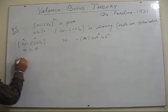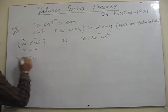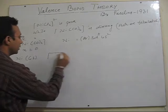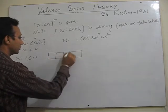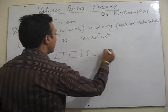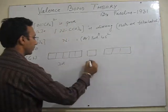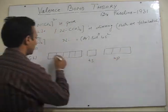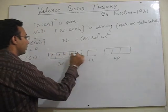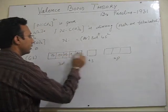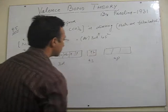So nickel in its ground state, atomic state, the configuration is like this: 3d8 and 4s2. Let's represent it. 3d8, 4s2. This is its ground state.